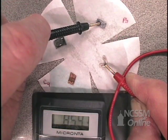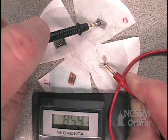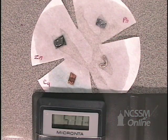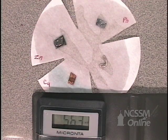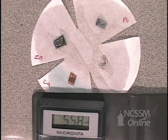Now what you need to do is to write half reactions for each of the reactions that you've seen here and calculate the voltage and compare that voltage to your theoretical values.